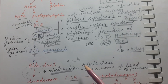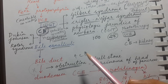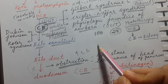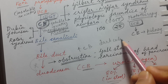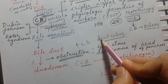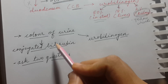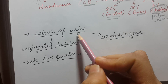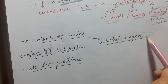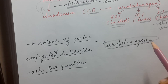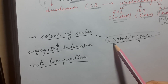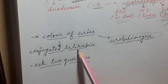One of the most confusing things for students is the cause of dark urine color in jaundice. In a normal person the dark color of urine is always due to urobilinogen, but in people who have jaundice it can be due to either urobilinogen or conjugated bilirubin.